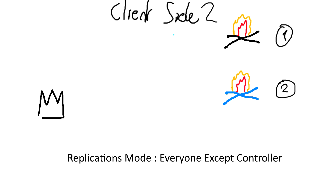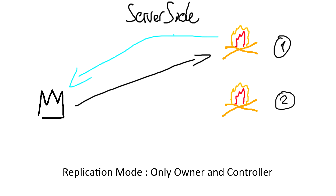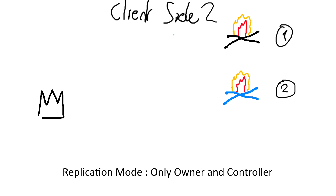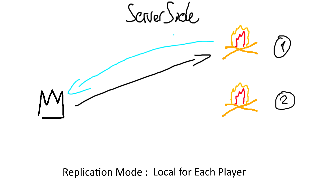The third replication mode is 'owner and controller only'. As the owner, if we modify the value we receive the callback. As the controller we also receive the callback. But as client side two we don't receive the callback. However, if we modify it as a non-controller entity, we will receive the callback from that entity.